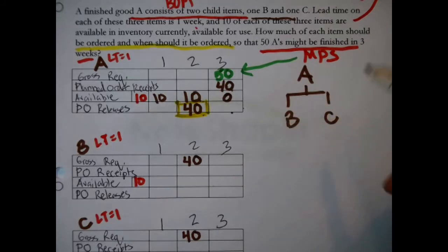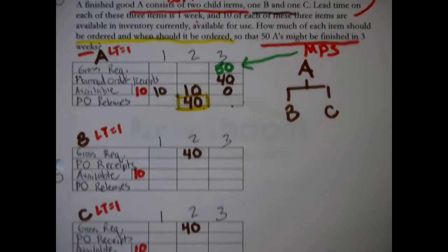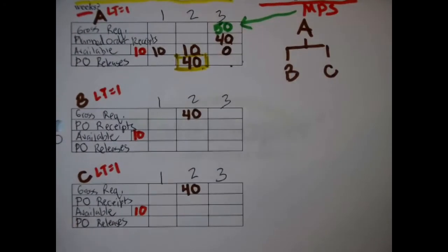In this particular problem, there only is one other level with B and C on it. Right, now we fill out the records for B and C. In the case of B we have ten.